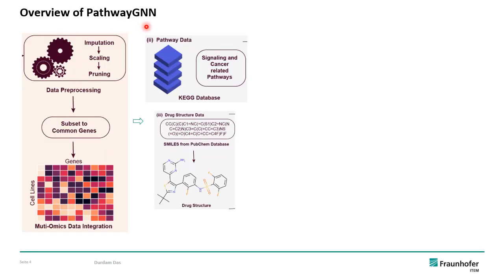The overview of the PathwayGNN pipeline starts with data preprocessing to remove all kinds of inconsistency and fix imputation problems. We then subset all three types of omics datasets to common genes to get a multi-omics integrated dataset. For the pathway data we have used cancer signaling pathways from the KEGG database, and for drug structure data we have used SMILES format from PubChem database.